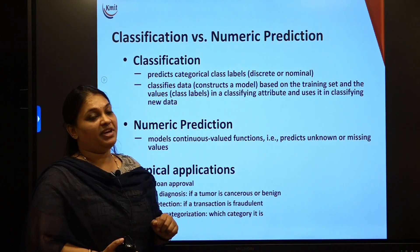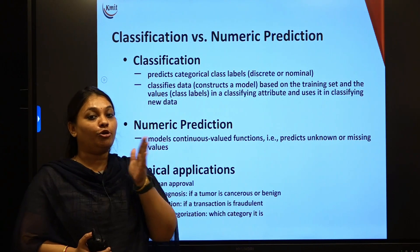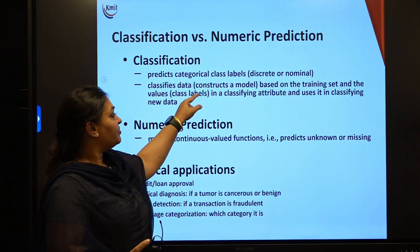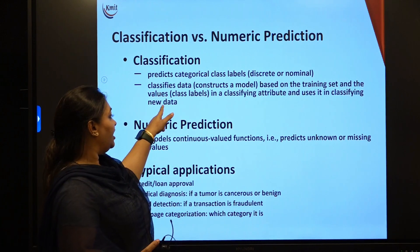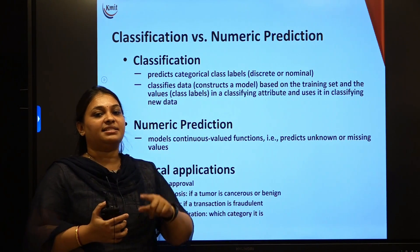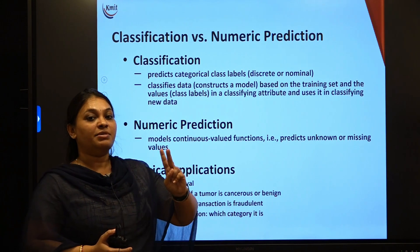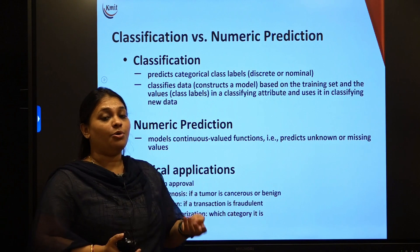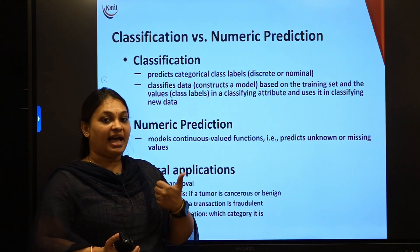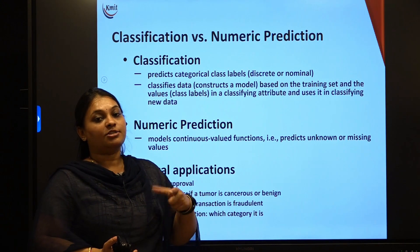Coming to classification versus numeric prediction — classification predicts category or class labels, which are discrete. It constructs a model based on the training set and the class label values in the classifying attributes, and uses it to classify new data. For example, with a student dataset having student ID, name, marks, and results, I classify students based on results — whether a student has passed or failed.